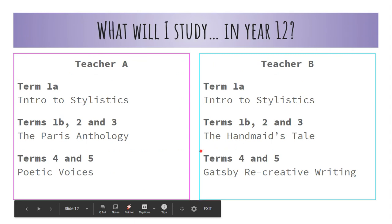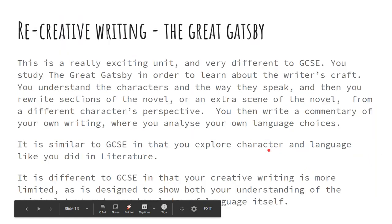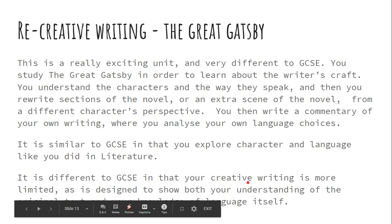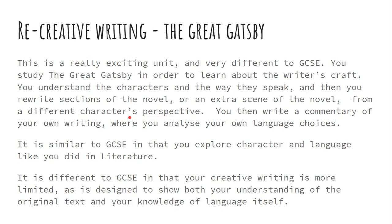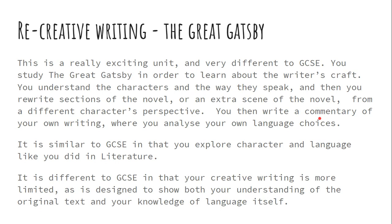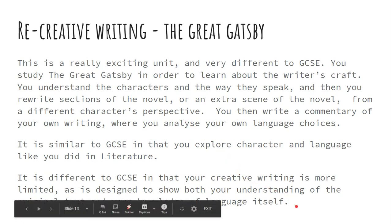Also in Terms 4 and 5, with Teacher B, you study the Gatsby Recreative Writing — a really exciting unit that students really look forward to and is very different to GCSE. You study The Great Gatsby to learn about the writer's craft, understand characters and the way they speak, and then rewrite sections of the novel or an extra scene from a different character's perspective. You then write a commentary on your own writing, analysing your language choices. It's similar to GCSE in exploring character and language, but different in that your creative writing is more constrained — you're writing from a specified character's perspective — and it's predominantly about showing your understanding of how to manipulate language. It's a fantastic unit, always really enjoyed by students.